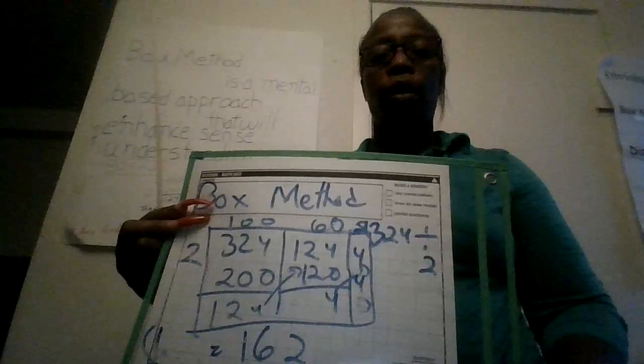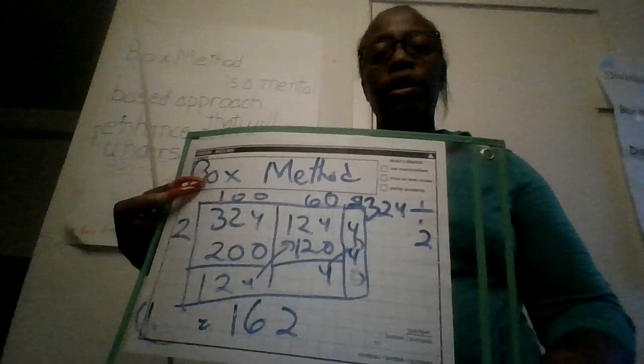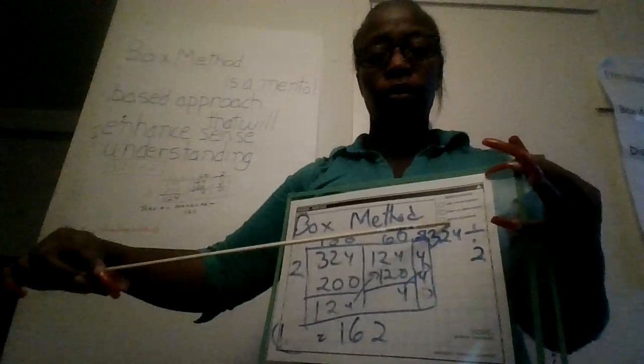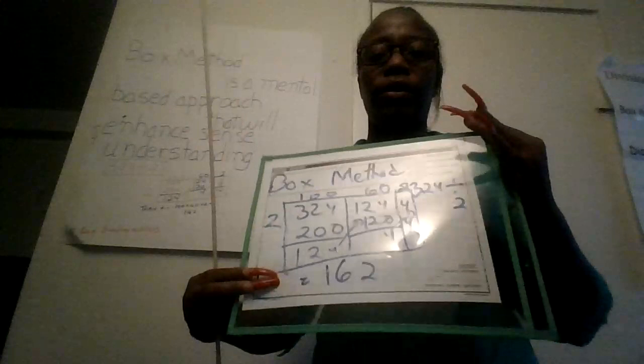You carry that to the next box. 2 times 60 is 120. Subtract 120 from 124, leaving you 4. Carry that to the next box where 2 times 2 is 4. You combine all the top numbers—100, 60, and 2—together to get the answer 162 for the box method strategy.